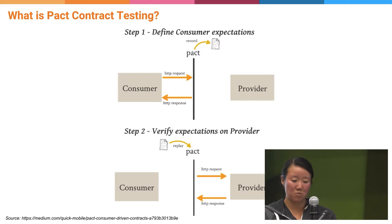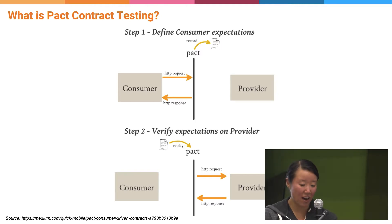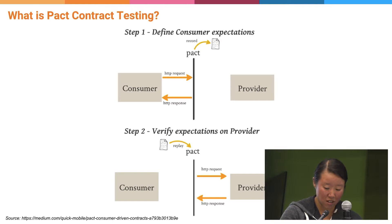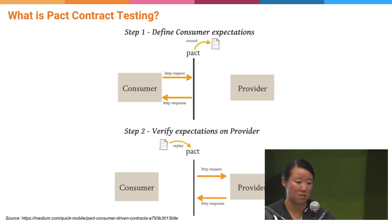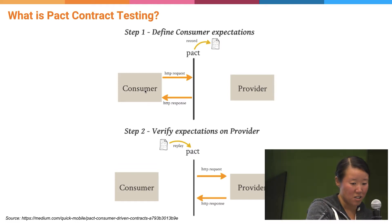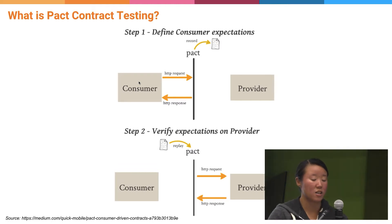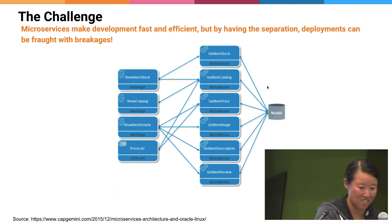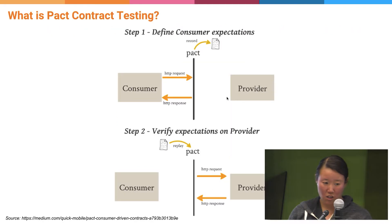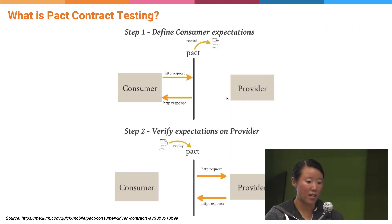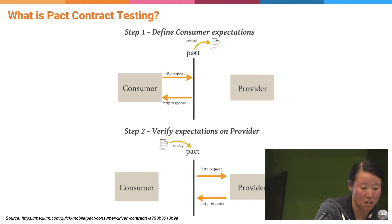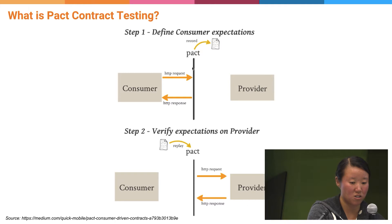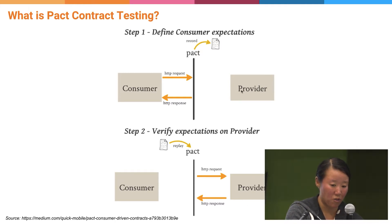So how does Pact actually help with this, and what is Pact contract testing anyways? At a high level, Pact contract testing creates a practice of creating contracts between services. For a consumer — think of it as a front-end or another service — and a provider service, there's a link between them. What Pact does is provide a Pact broker in the middle. The consumer service creates a contract against the provider service to understand all the expectations it's laying out from the provider service.